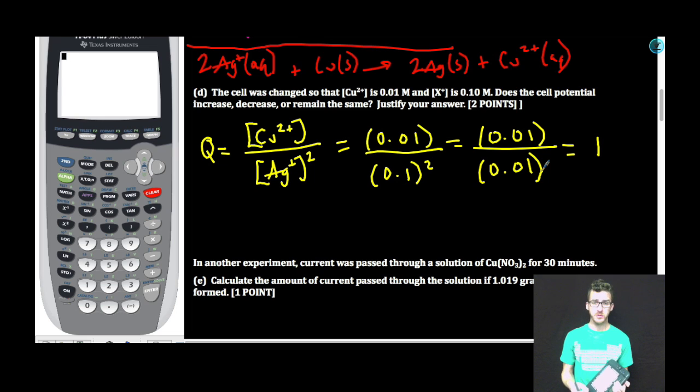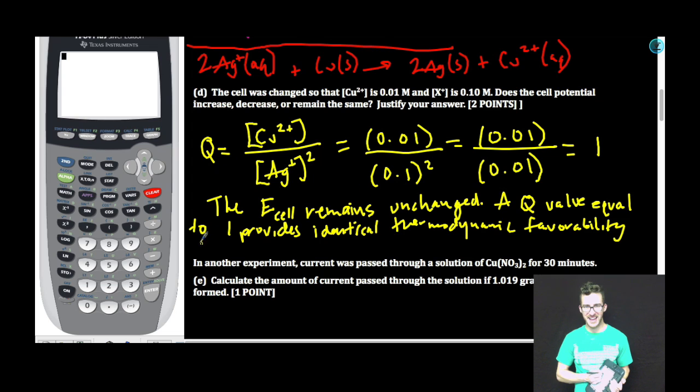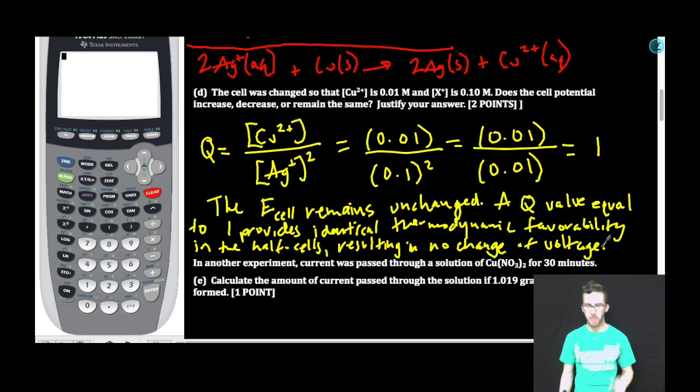Because the value of Q is equal to the relationship between the concentrations of our products and reactants under standard conditions, the E cell, no not symbol, because these are not standard conditions, remains unchanged. A Q value equal to 1 provides identical thermodynamic favorability in the half cells, resulting in no change of voltage. Again, as always, as you mess with the concentrations of your reactants and products, you are encouraged to reference the Nernst equation if that is something that you are comfortable with, although not required for the AP test any longer.